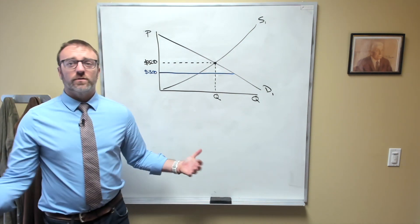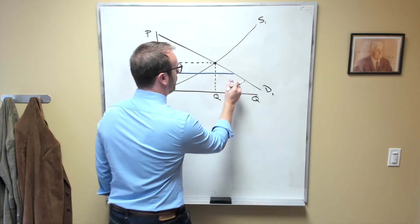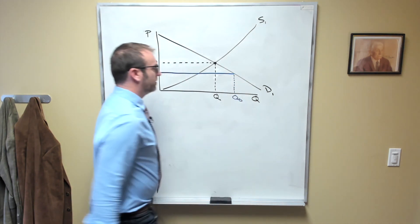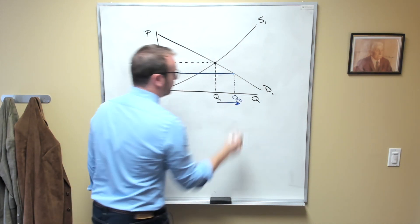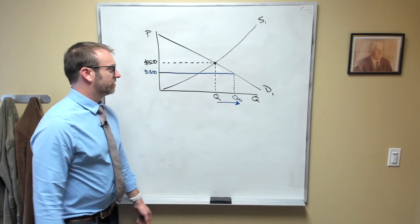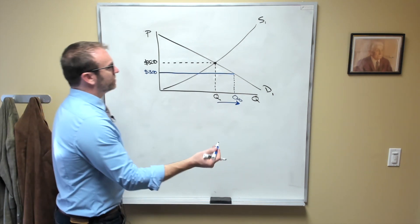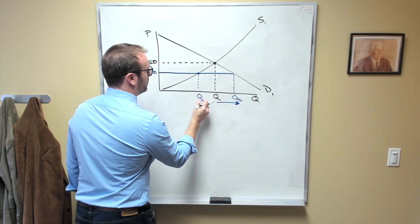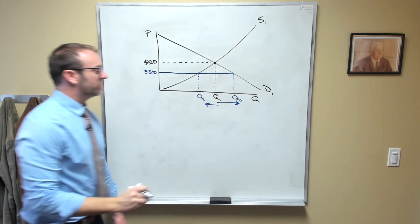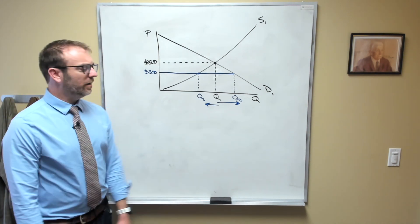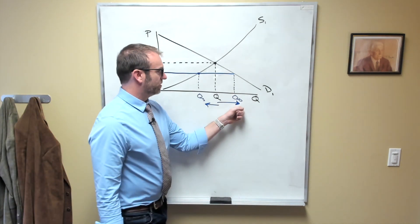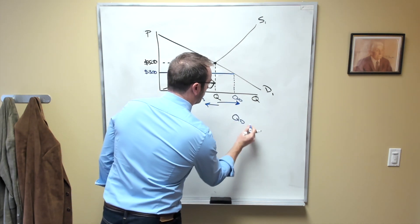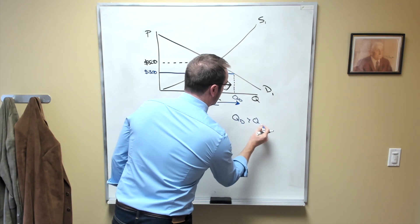Well, based on the first law of demand, we can readily understand why the quantity demanded is going to increase. At lower prices, people want to buy more of this. But at the same time, we can also understand why the quantity supplied is actually going to decrease. If you're paid less, then you'll produce less. So now we have more people wanting this good than we have the good available. So here we would say that the quantity demanded is greater than the quantity supplied.